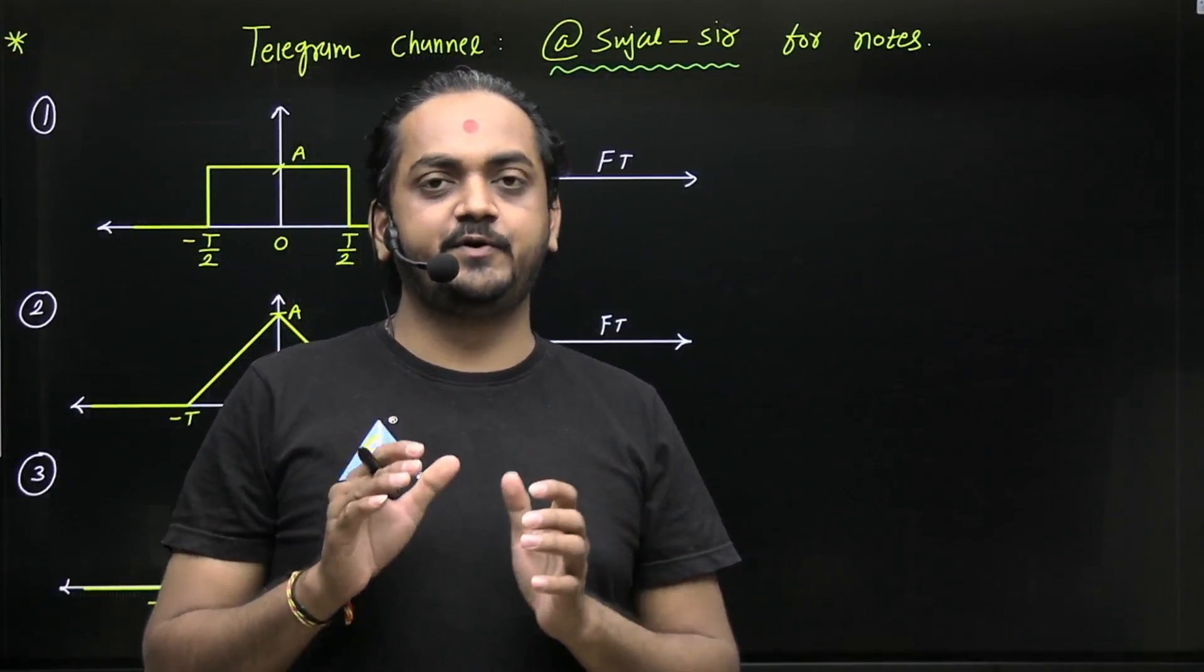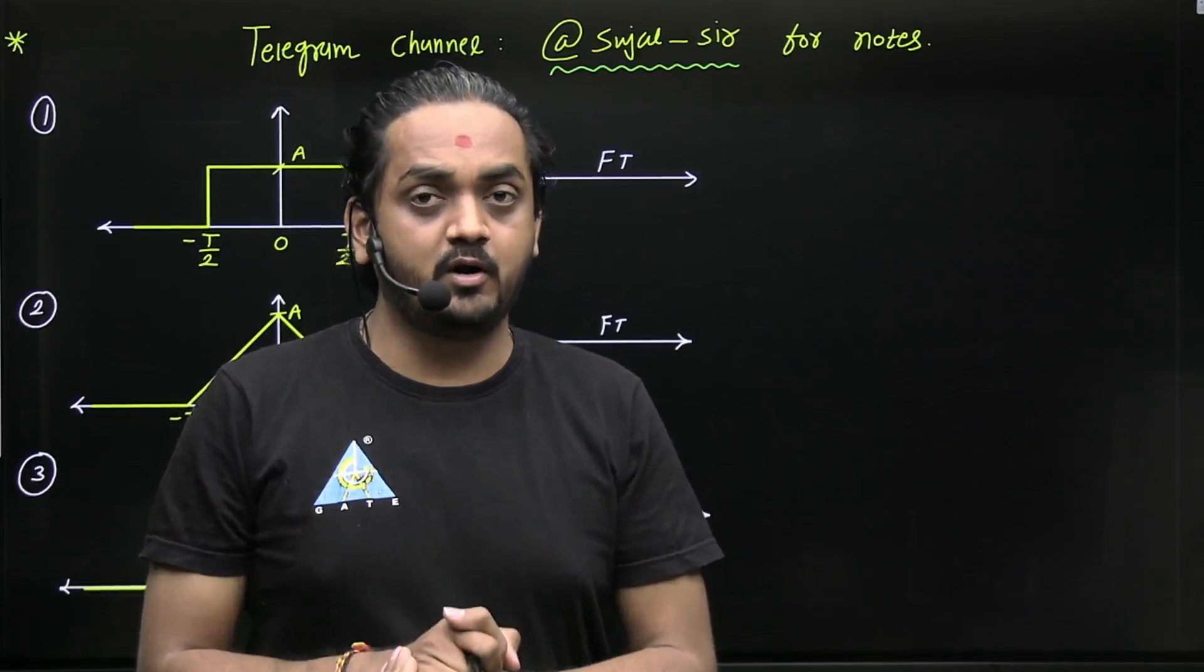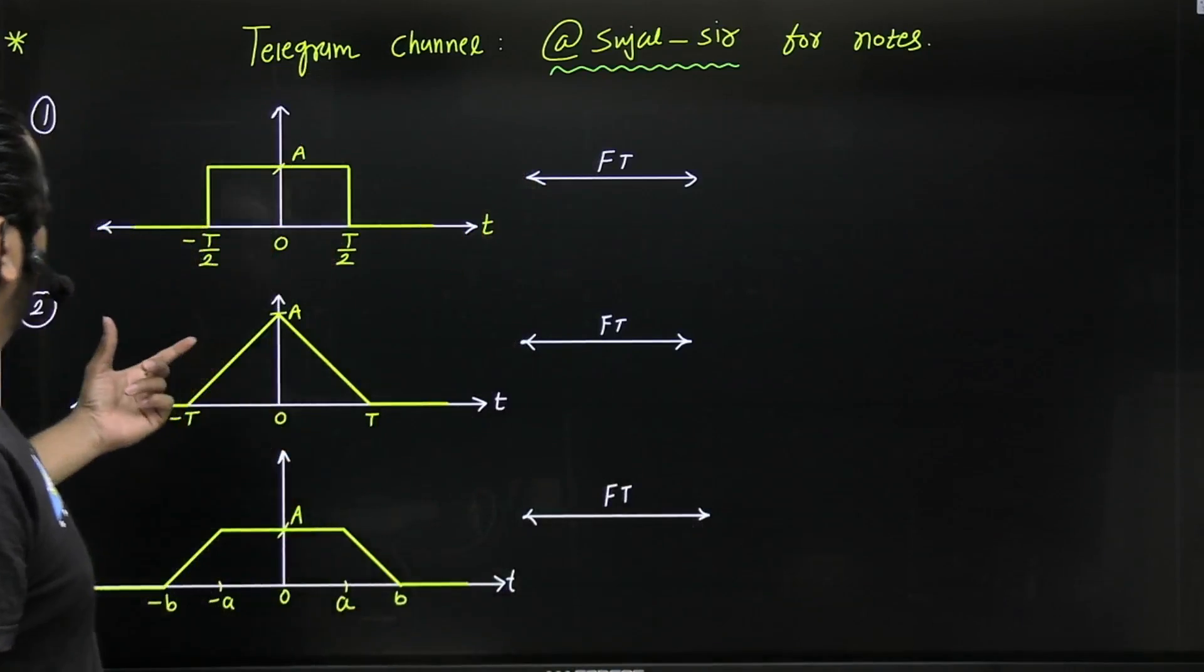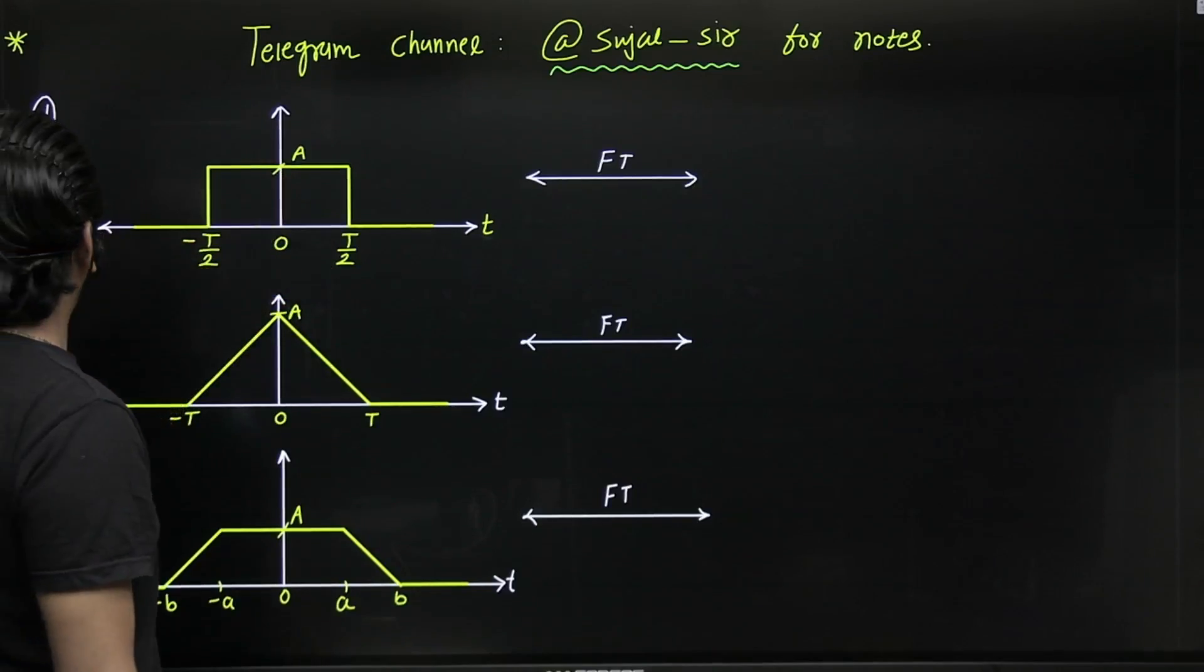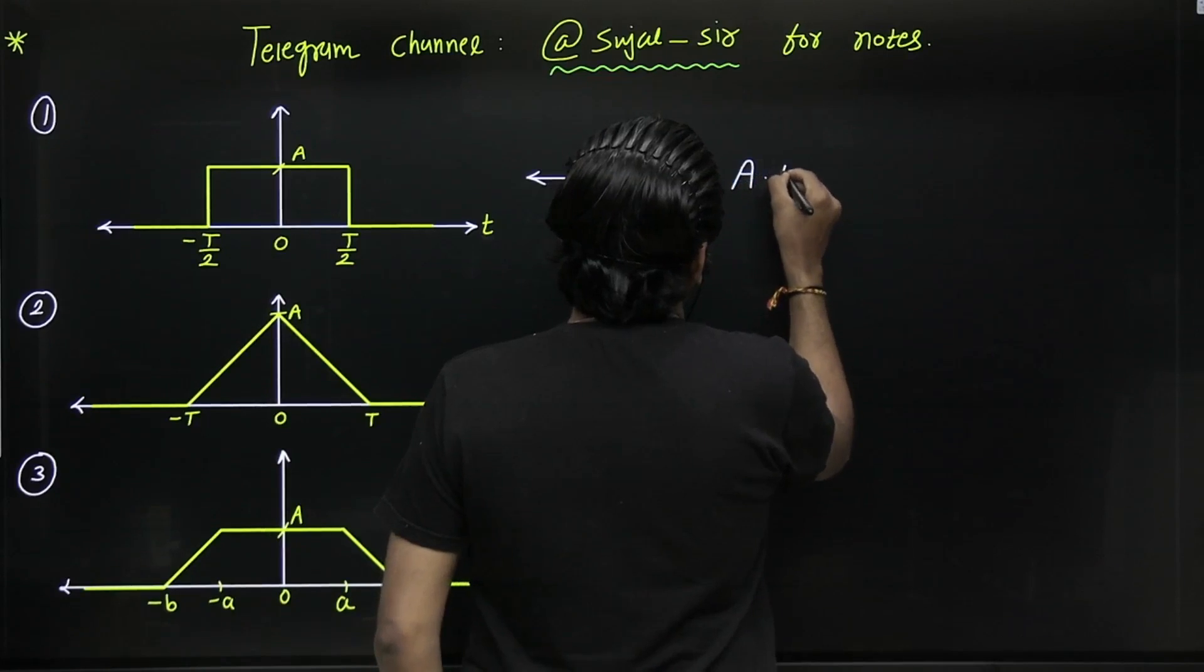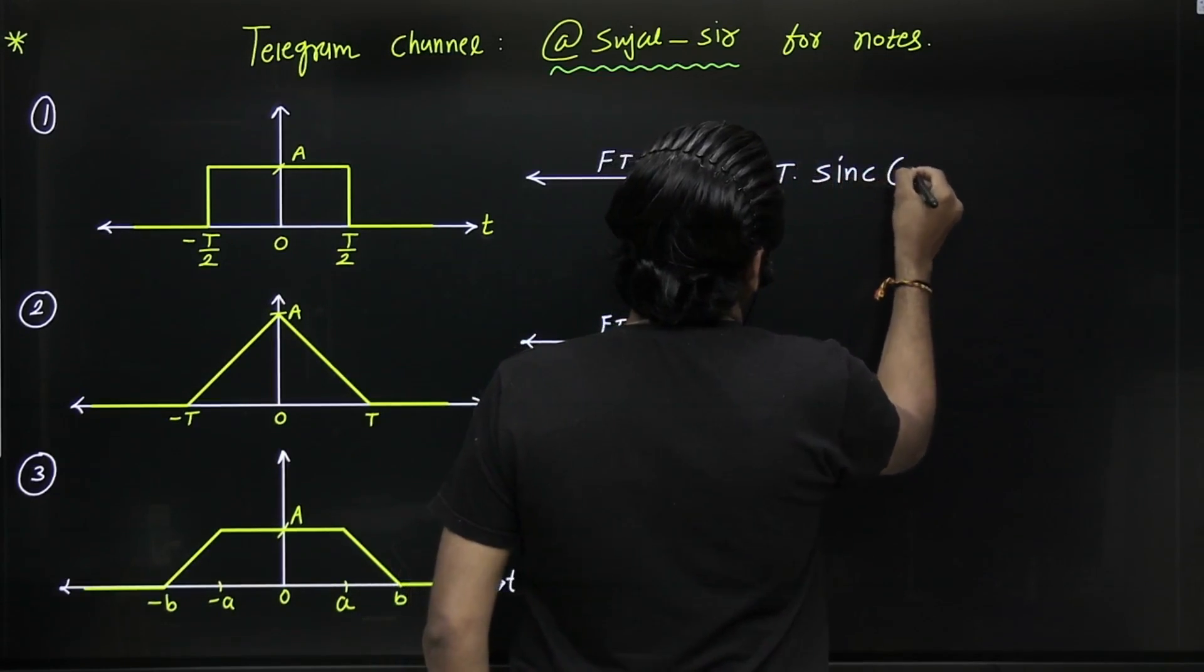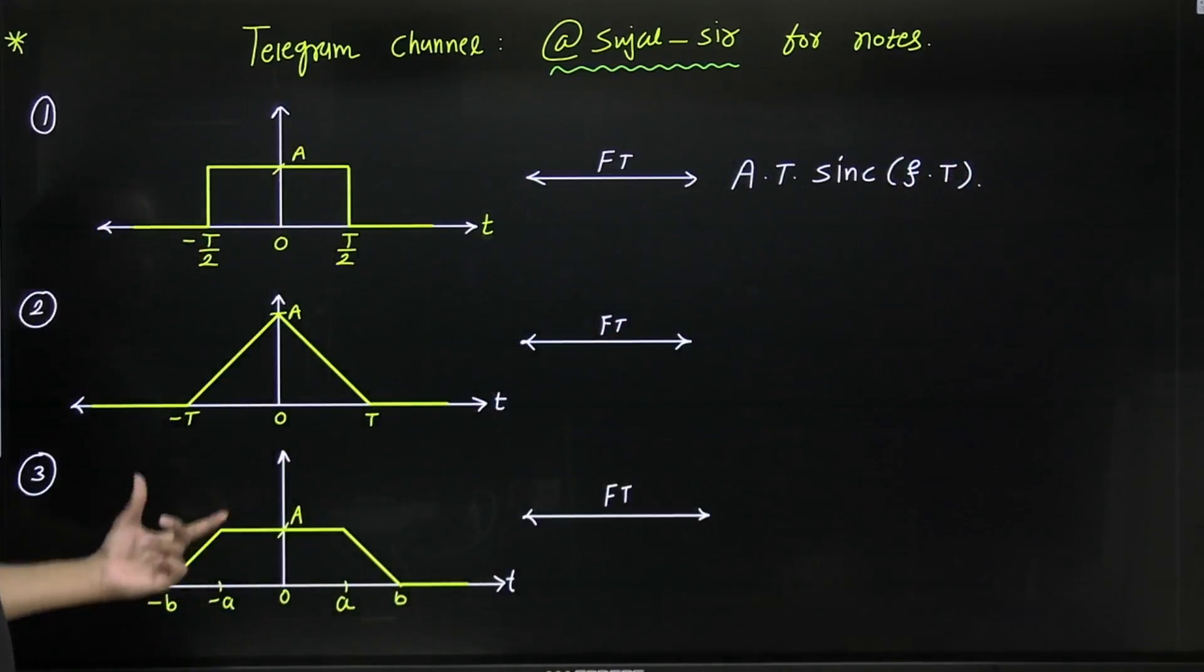Hello dear students, in this video I will provide you Fourier transform of some important functions. If it is a rectangle function from minus t by 2 to plus t by 2 with amplitude a, then its Fourier transform is a times t times sinc function sinc of ft.